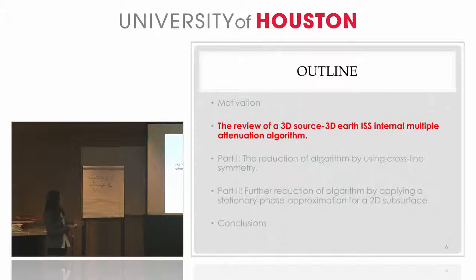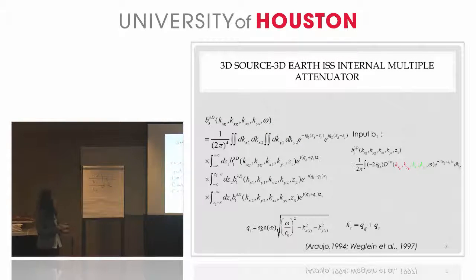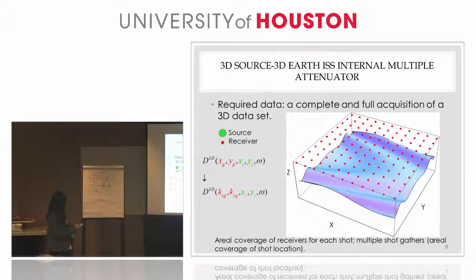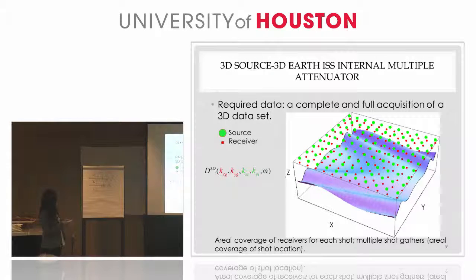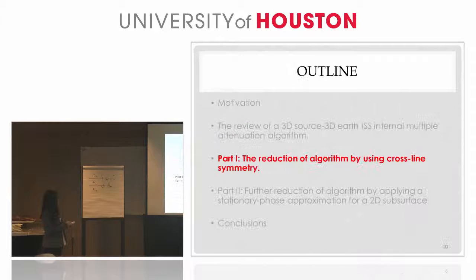Let's take a closer look at this 3D SS internal multiple attenuation algorithm. Here is the algorithm, which has been proposed by Arugio in 1984 and Weglein in 1997. As an input, this 3D algorithm requires an area coverage of all the receivers for each shot, and requires the sources to be on the area on this measurement surface, which means it requires a full area coverage of all the receivers and all the sources. If your Earth is no longer 3D but a 2D Earth, what will happen?